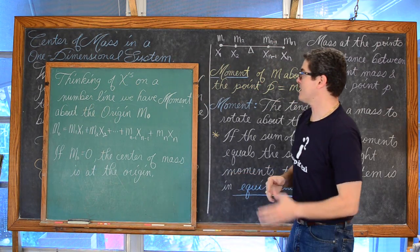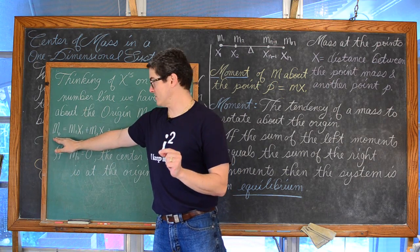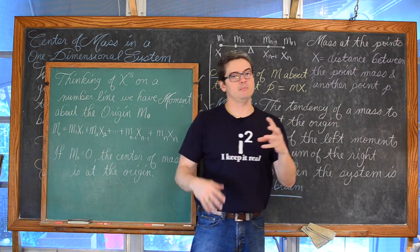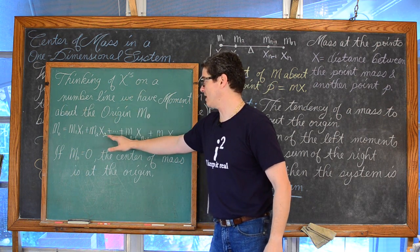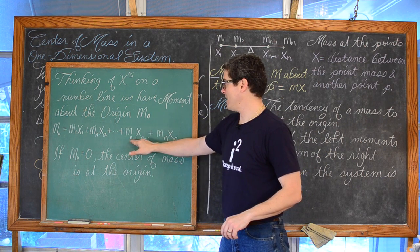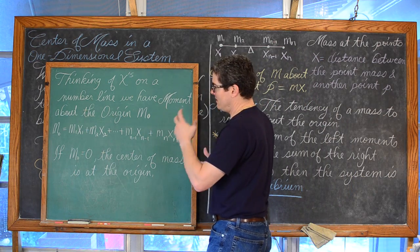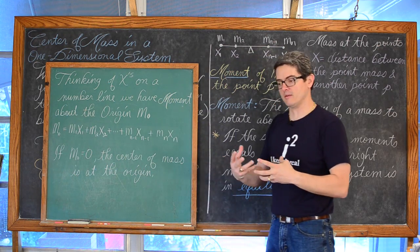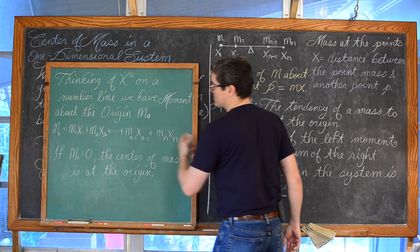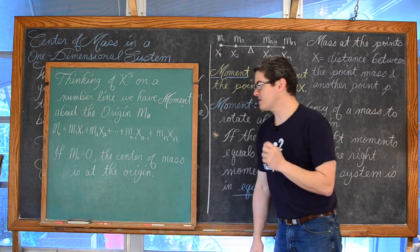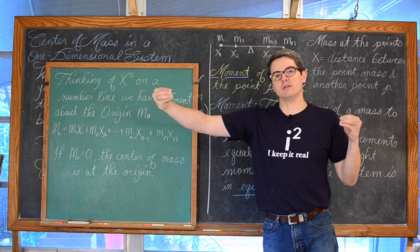Thinking of our x-values on the number line: the moment about the origin, m sub o, is calculated as m₁x₁ + m₂x₂ + ... + mₙxₙ — the product of each point mass and its distance from zero. If this sum equals zero, the center of mass is at the origin and the system is in equilibrium. If it doesn't equal zero, the system is not in equilibrium.